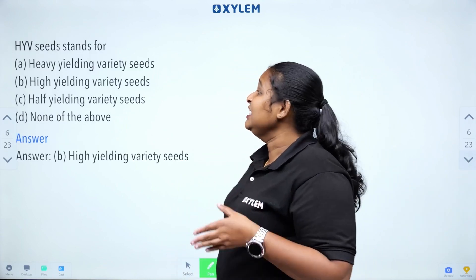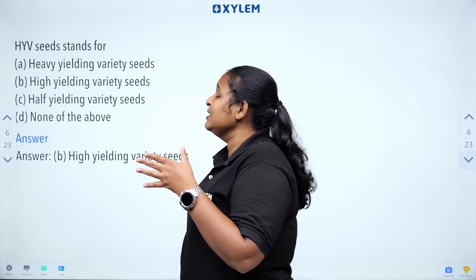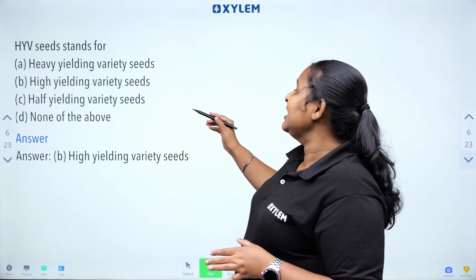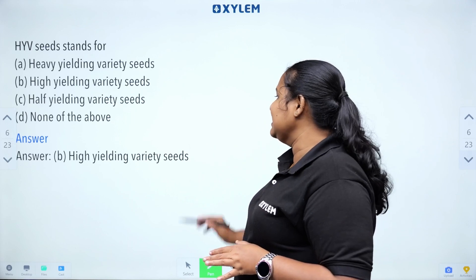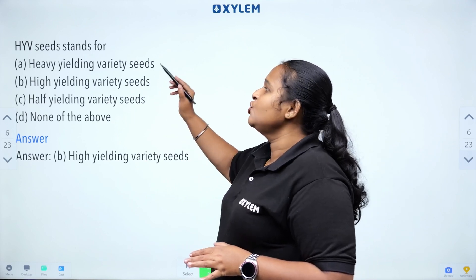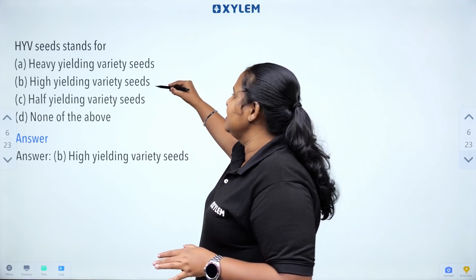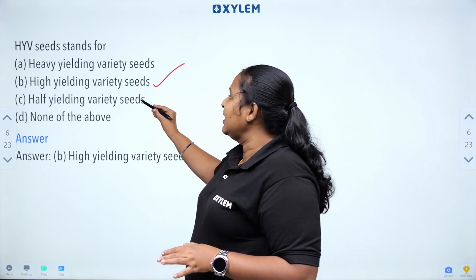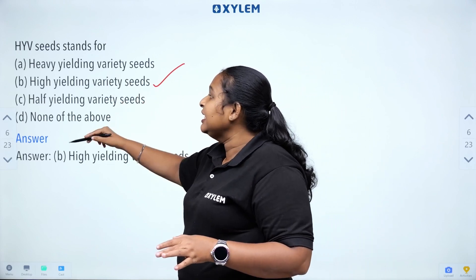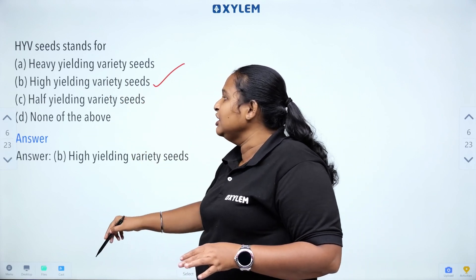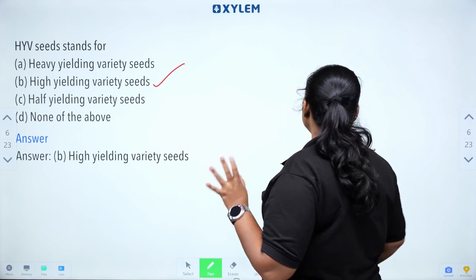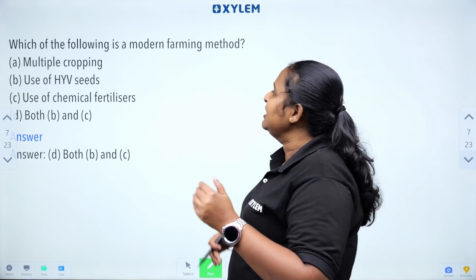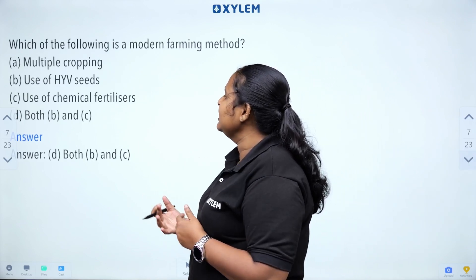HYV seed stands for High-Yielding Variety of seeds. We call it HYV seeds — high-yielding varieties of seeds.